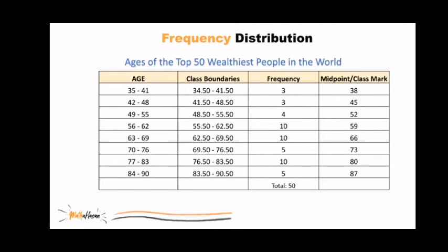The class boundaries are used to separate the classes so that there are no gaps in the frequency distribution, especially when we have continuous variable like age. So if we got a value of 41.23, it won't be difficult for the placement of this number or tally because we have class boundaries. So if we got 41.23, where are we going to put it? Is it 35 to 41 or 42 to 48? Well, if you have class boundaries, it's not difficult because we will have a placement for 41.23 by using this interval.